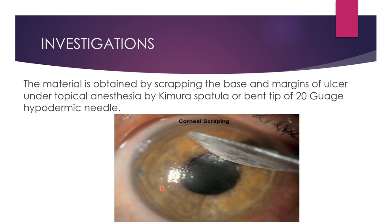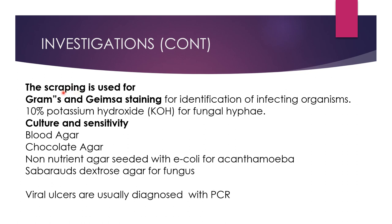The diagnosis of corneal ulcer is not complete without laboratory investigations. After the initial examination, take material for lab diagnosis. After sterilization measures, instill topical anesthetic drops and scrape the ulcer from its base and margins using a Kimura's spatula. If Kimura's spatula is not available, a bent tip of a 20-gauge hypodermic needle can be used. If the patient uses contact lenses, always send the lens, its casing, and the solution to the lab for culture. The scraping material is used for Gram's stain, Giemsa stain, and — if fungus is suspected — potassium hydroxide stain to identify fungal hyphae.